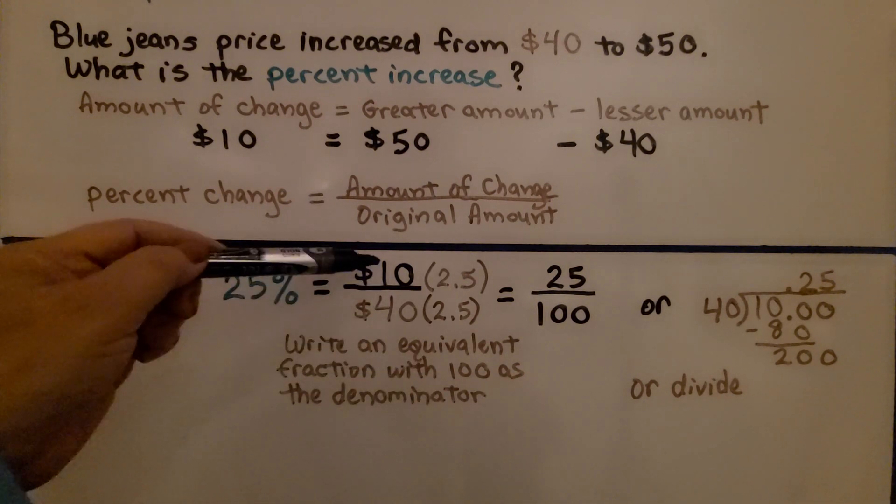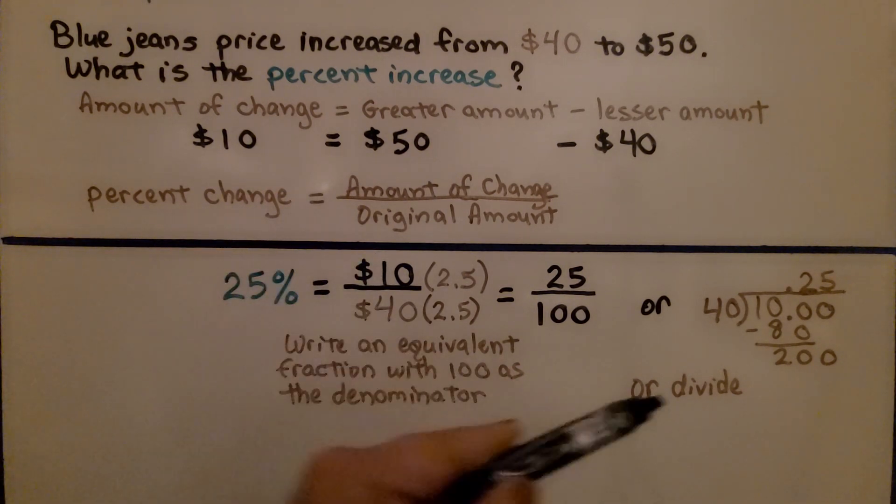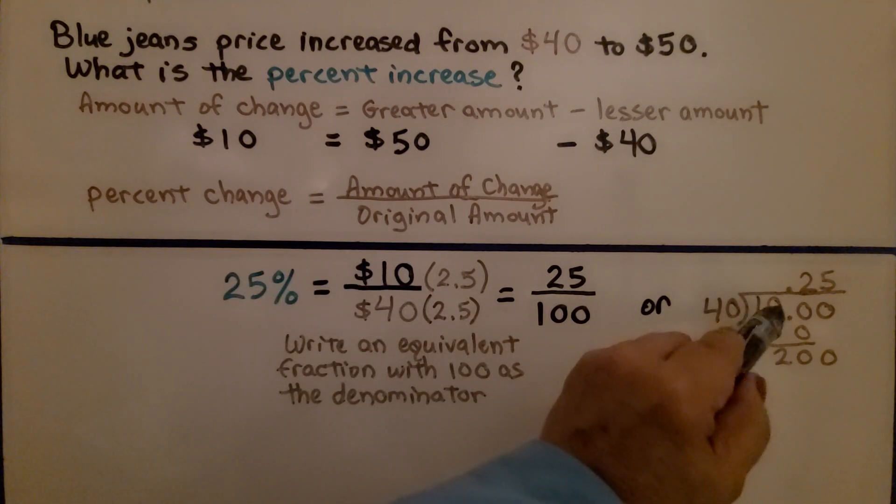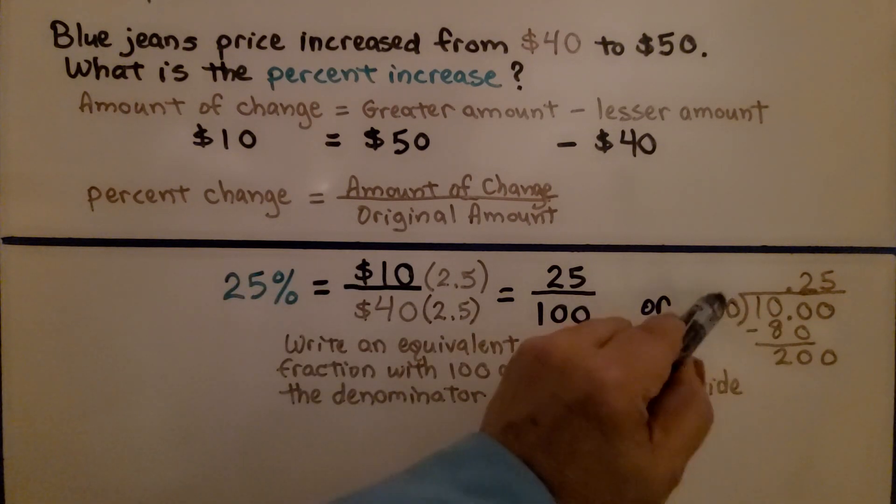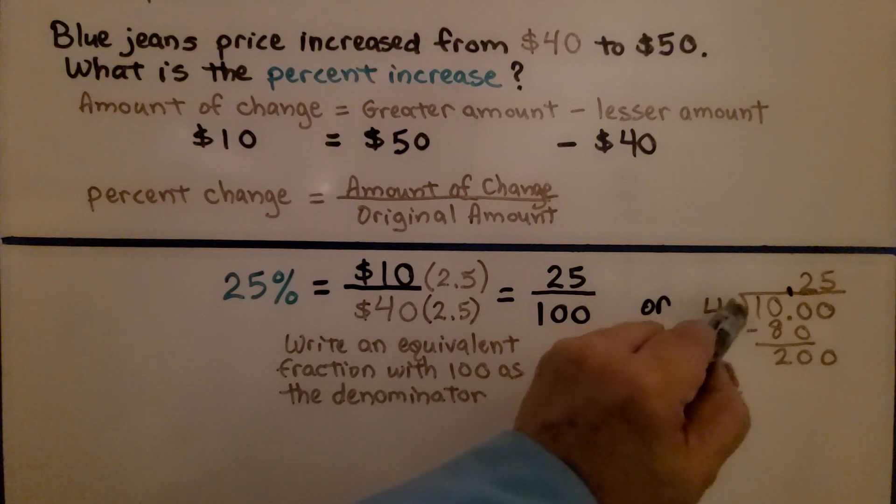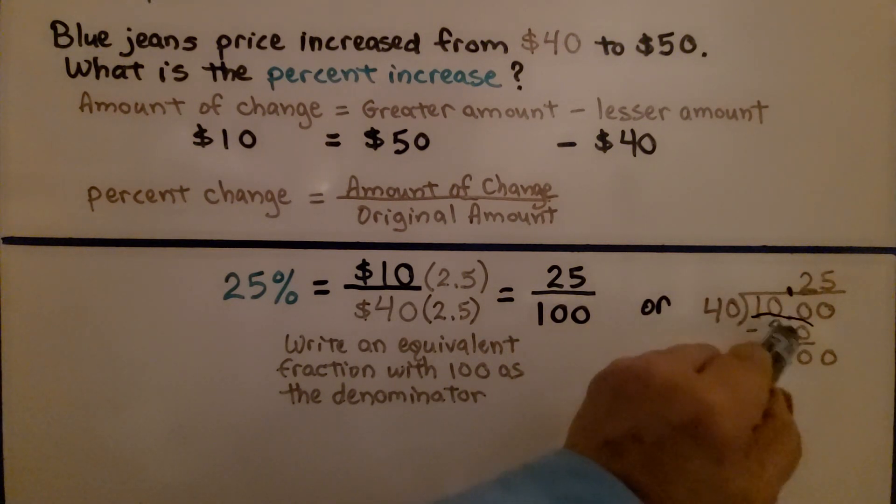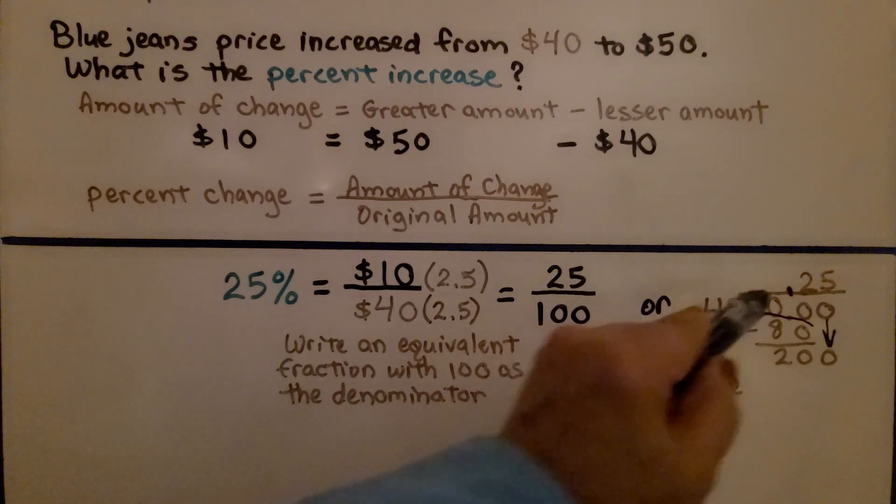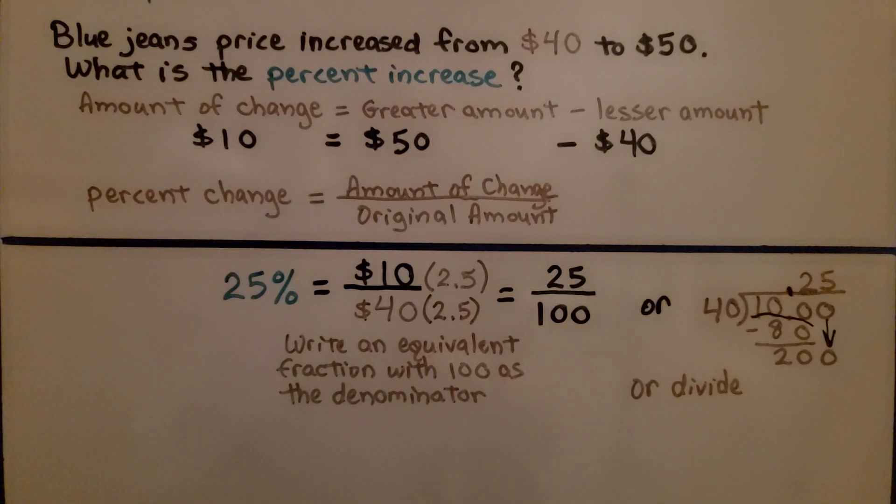Or we could do 10 divided by 40. So because 10 is the numerator, that's going to go inside the long division bracket. So 40 fits into 10. We're going to have to go into the decimals here and do 40 fits into 100 two times. And that's 80. We subtract it, get 20, drop down this 0. And now we do 40 fits into 200 five times. We have 0.25. That's 25%.